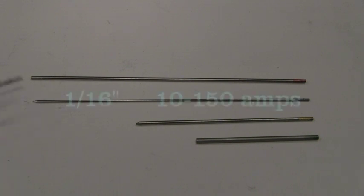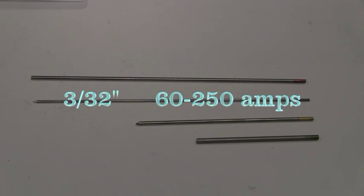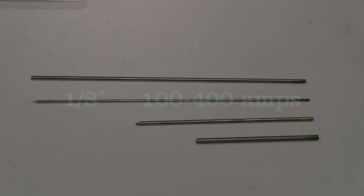So as an example, a 1/16 tungsten is best suited to weld between 10 and 150 amps. A 3/32nd tungsten is best suited to weld between 60 and 250 amps, and an eighth inch tungsten is best between 100 and 400 amps.